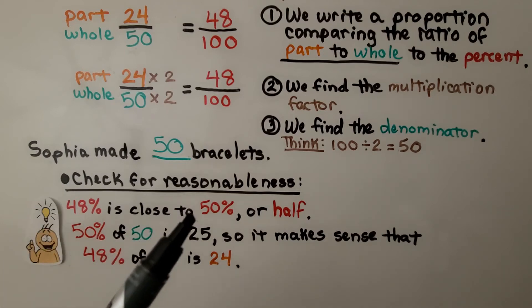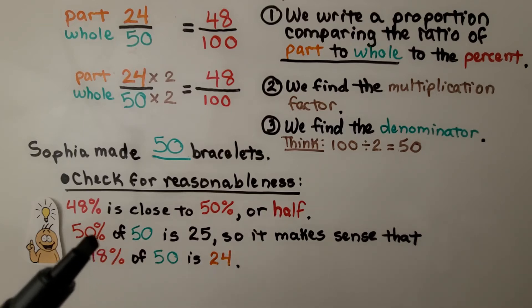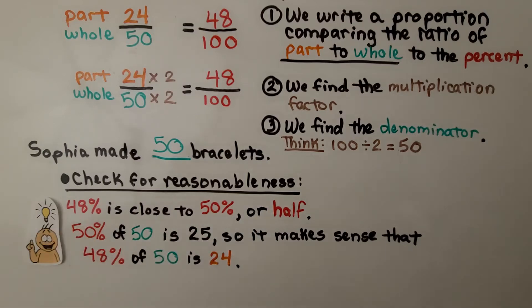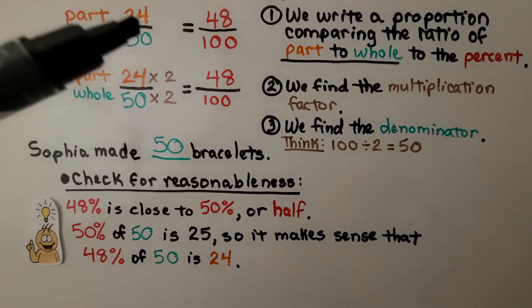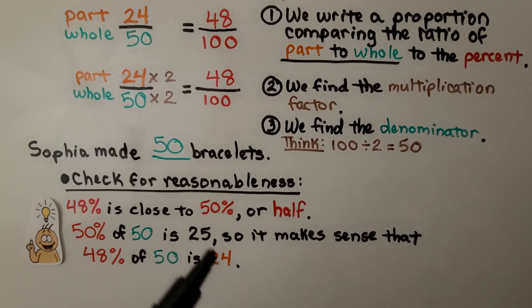48% is close to 50% or half. 50% is half, isn't it? So that means half or about half of the bracelets she made were purple. And we know that's 24. And 50% of 50 is 25, so it makes sense that 48% of 50 is 24. That's very close to 25, so it's a reasonable answer.